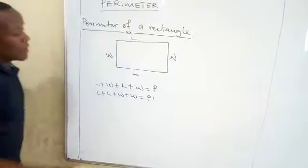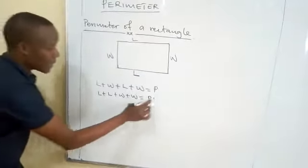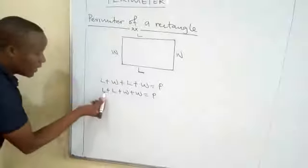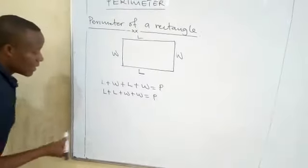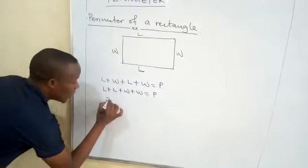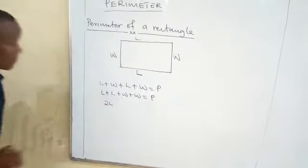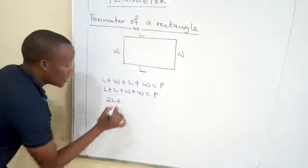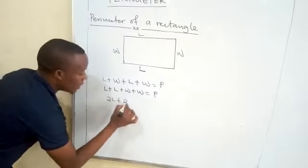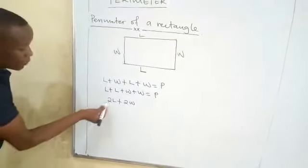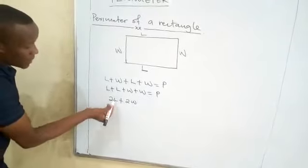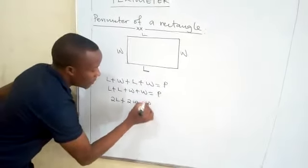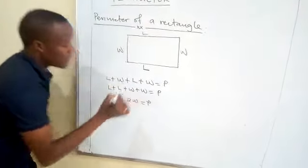This letter P represents perimeter. Now, length plus length gives us two lengths, and width plus width gives us two widths. Therefore, two lengths plus two widths is equal to P, which means perimeter.